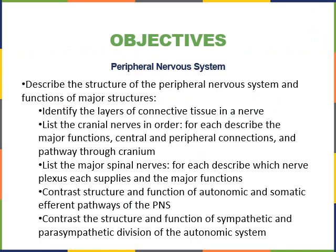As we go, we will cover the following study objectives: describe the structure of the peripheral nervous system and functions of major structures; identify the layers of connective tissue in a nerve; list the cranial nerves in order and describe the major functions, central and peripheral connections, and pathway through the cranium; list the major spinal nerves and describe which nerve plexus each supplies; contrast the structure and function of the autonomic and somatic efferent pathways; and contrast the sympathetic and parasympathetic divisions of the autonomic nervous system.